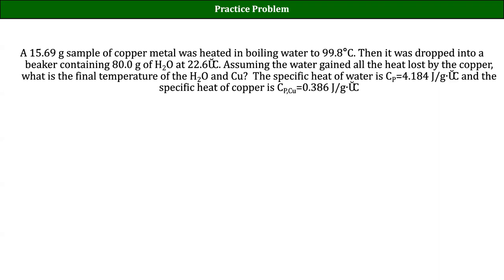We know everything except temperature final. Actually, we have two equations but three unknowns: Q for the water, which we don't know; Q for the copper, which we don't know; and T final. So we need one more equation. What's the last equation? Q copper equals negative Q water. Don't forget that negative sign or you're going to get something that doesn't make sense.